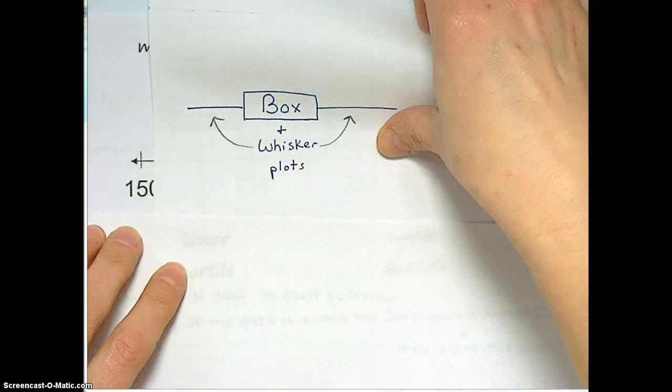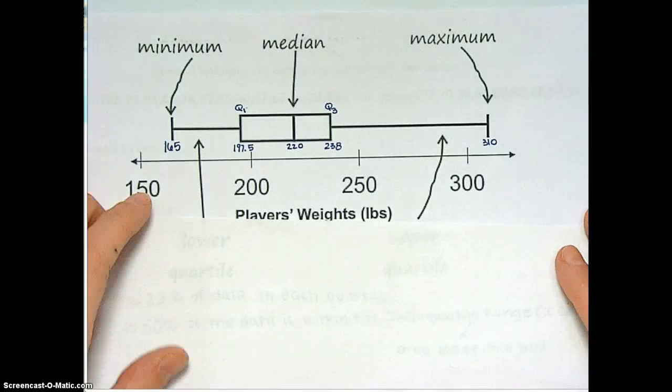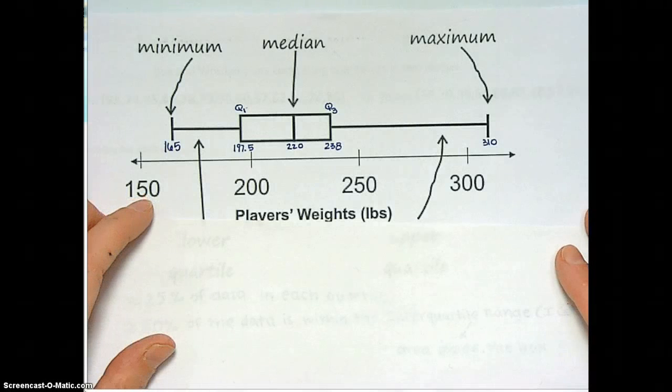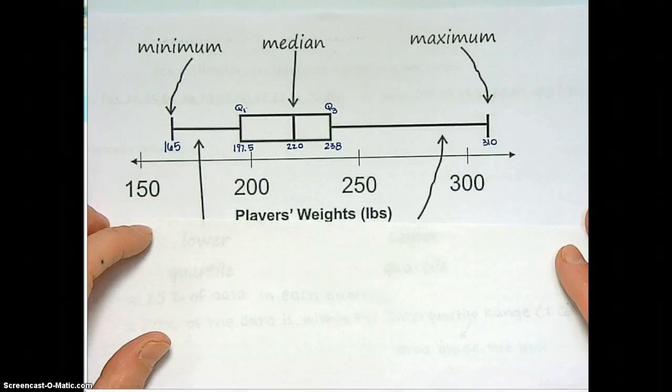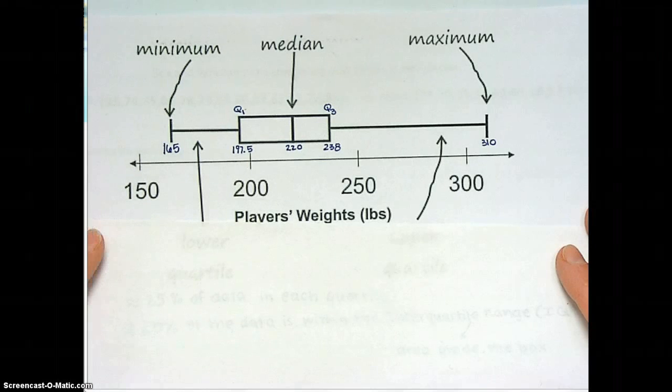Here is a basic box and whisker plot describing the median, the quartiles, and the extremes of a data set, and it displays how they're distributed. This is some kind of athlete's player's weight, so I'll give you a chance to guess what they are in a little while.